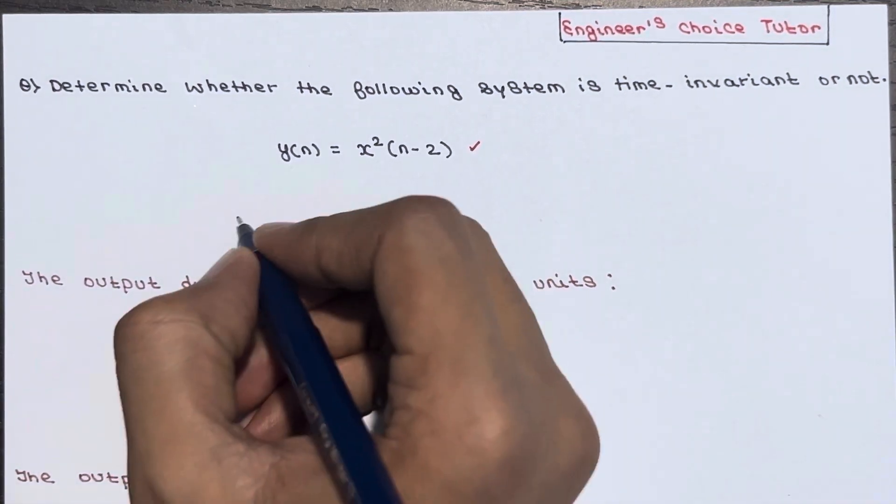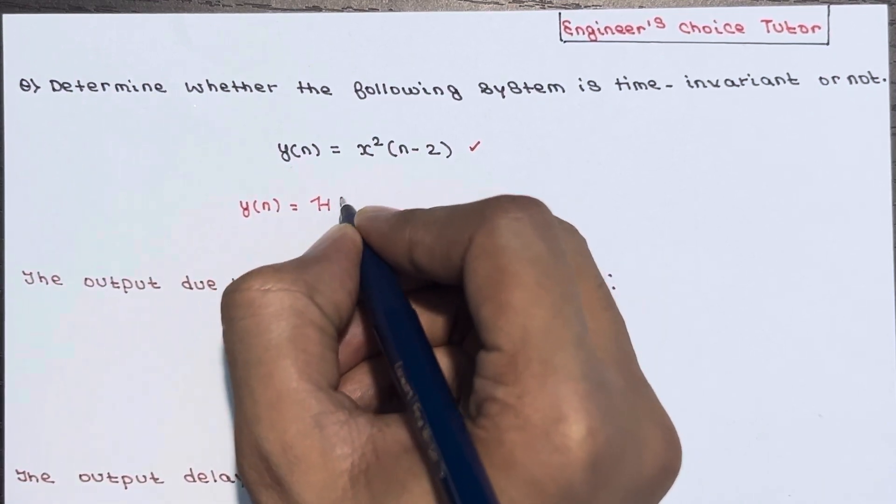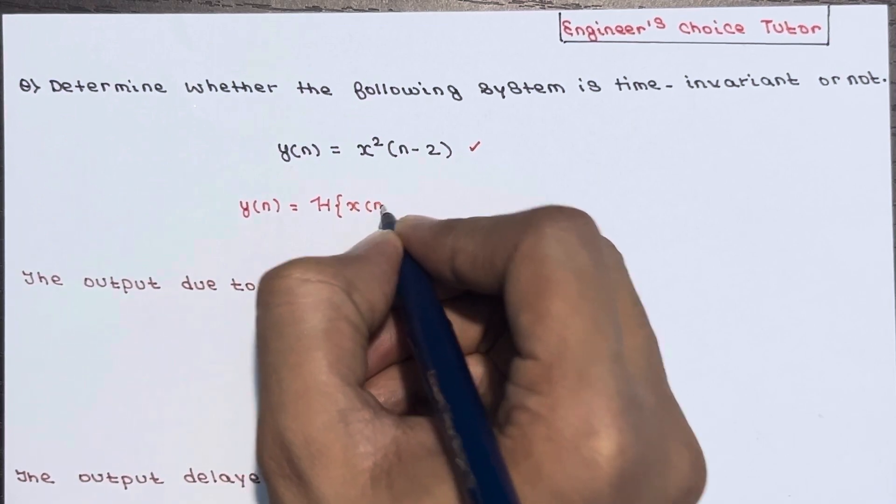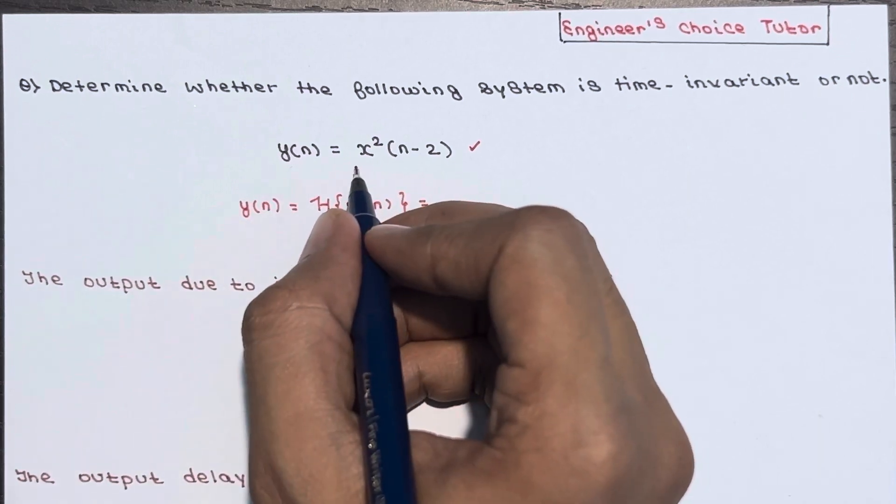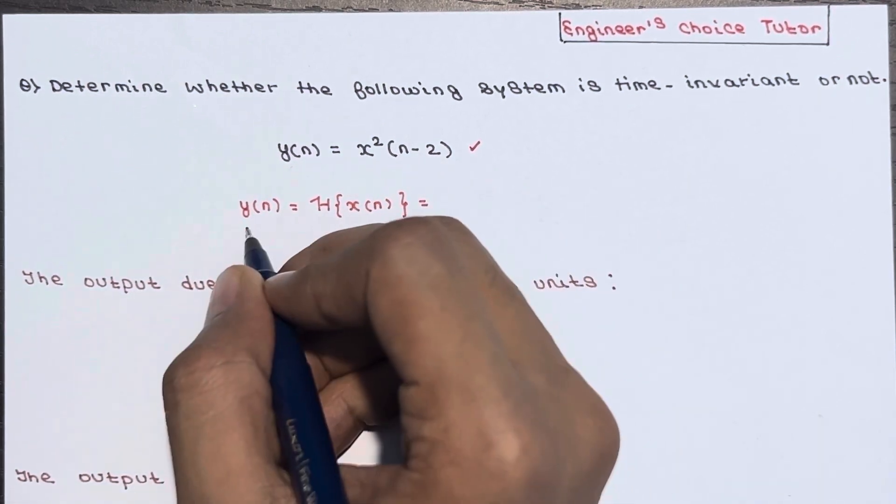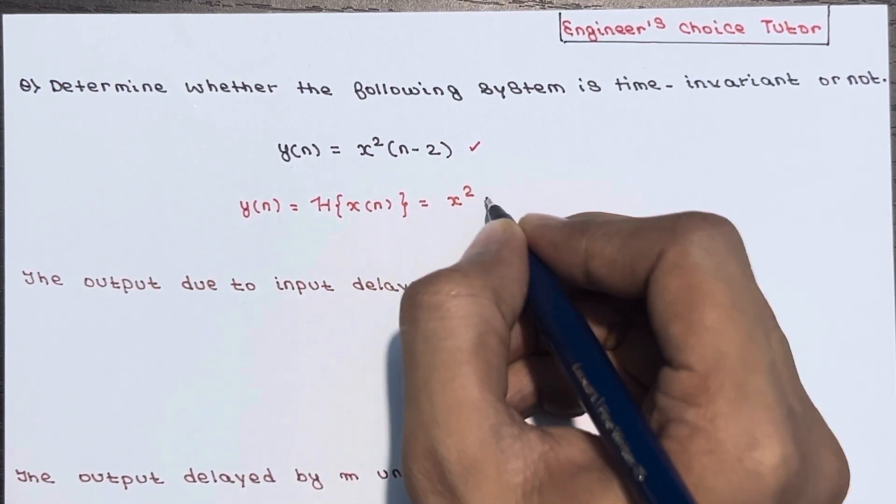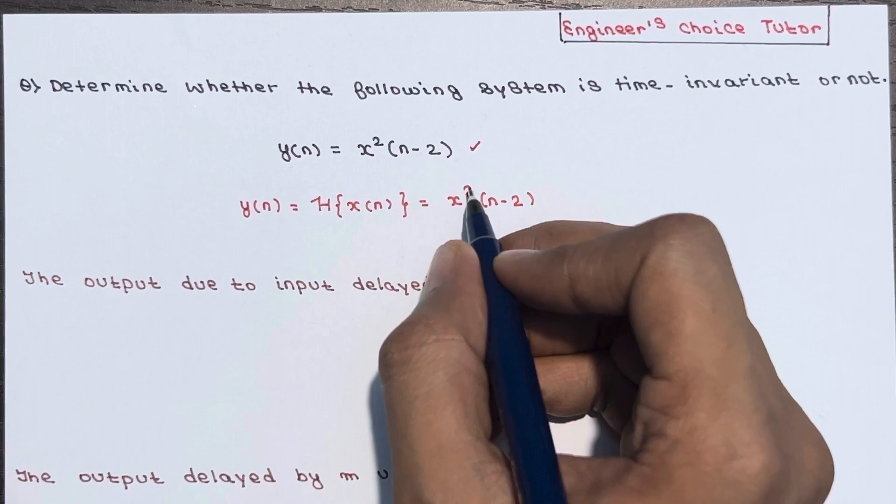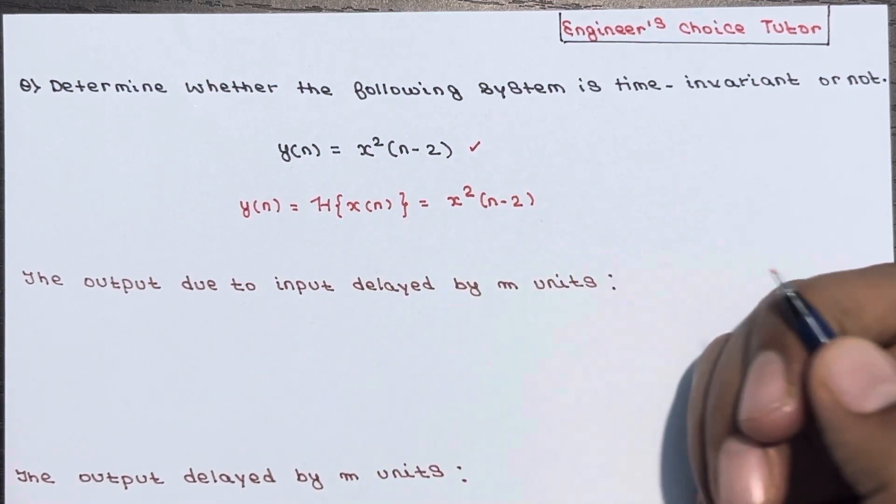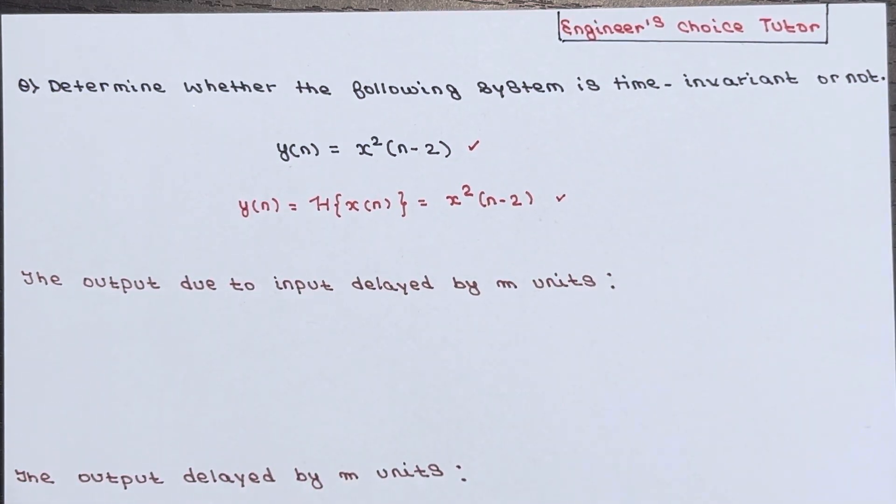Now as we know that y(n) is the transform of x(n). So basically y(n) is given equal to this, and from here we get that y(n) is transform of x(n). This is equal to x²(n-2), so x of (n-2) whole square. Now we have to check whether this system is time invariant or not.